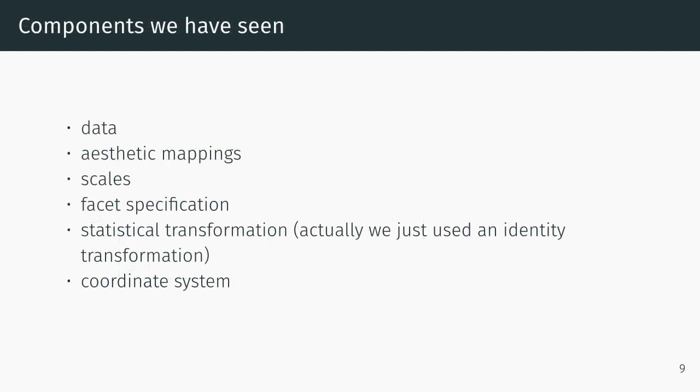The components we've seen here are the data, the aesthetic mappings, the scales, the facet specification, the statistical transformation (we just used an identity transformation), and the coordinate system, which was the Cartesian coordinate system.